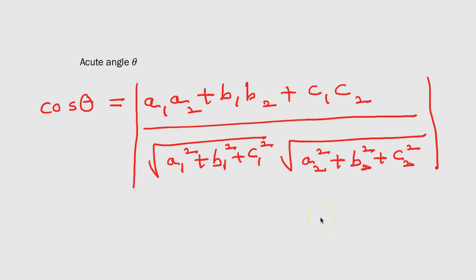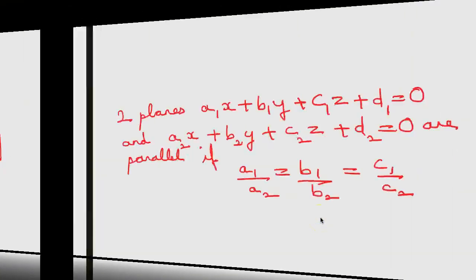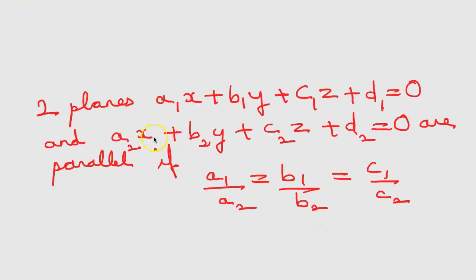Two planes a₁x + b₁y + c₁z + d₁ = 0 and a₂x + b₂y + c₂z + d₂ = 0 are parallel if the coefficients are proportional — that is, a₁/a₂ = b₁/b₂ = c₁/c₂.